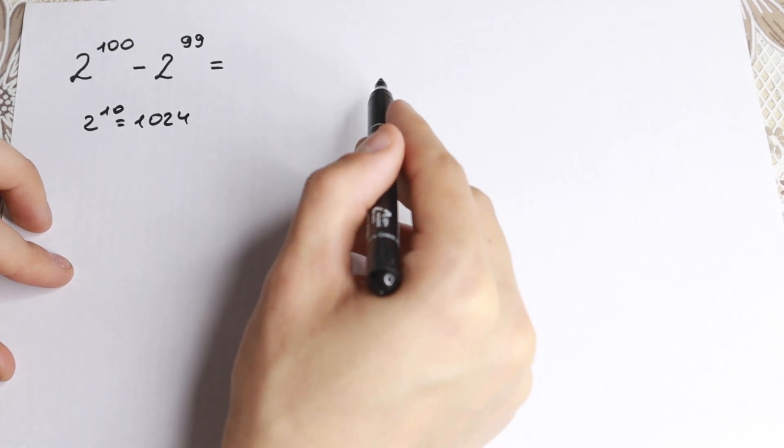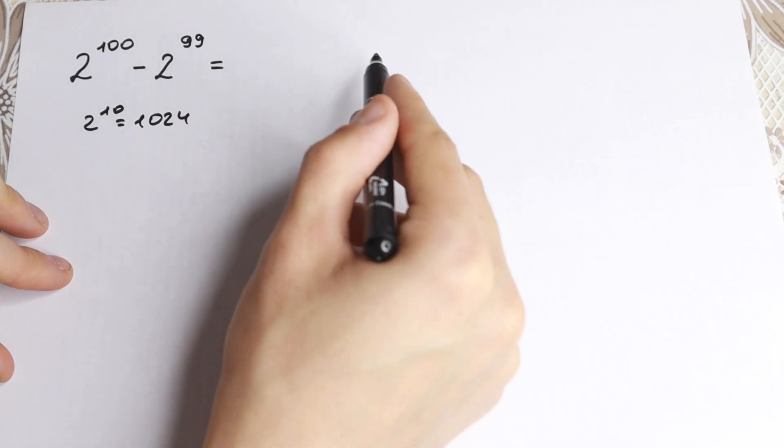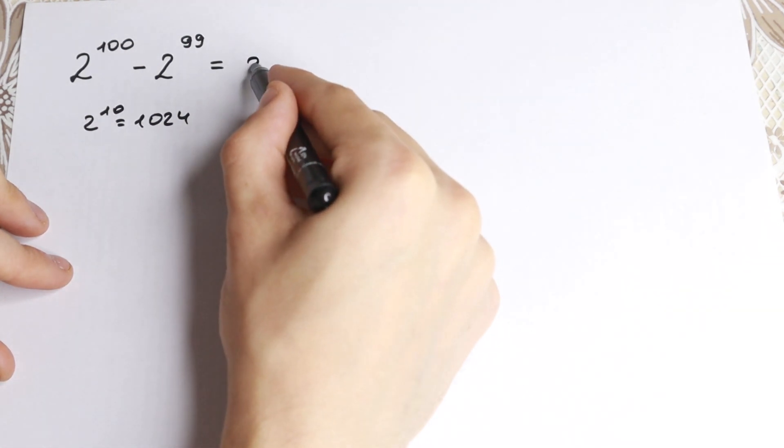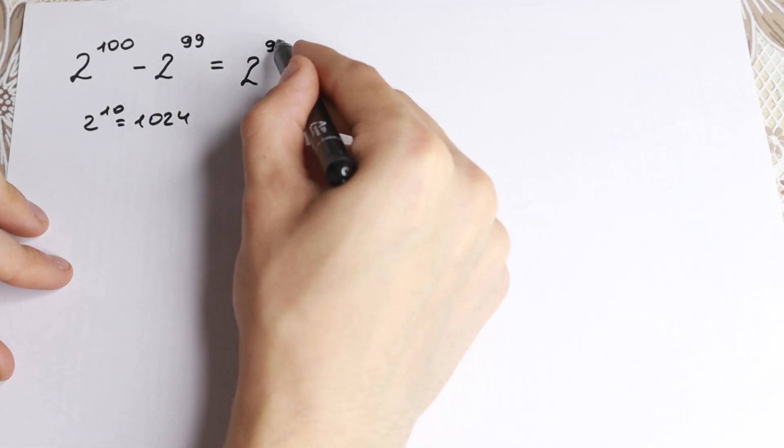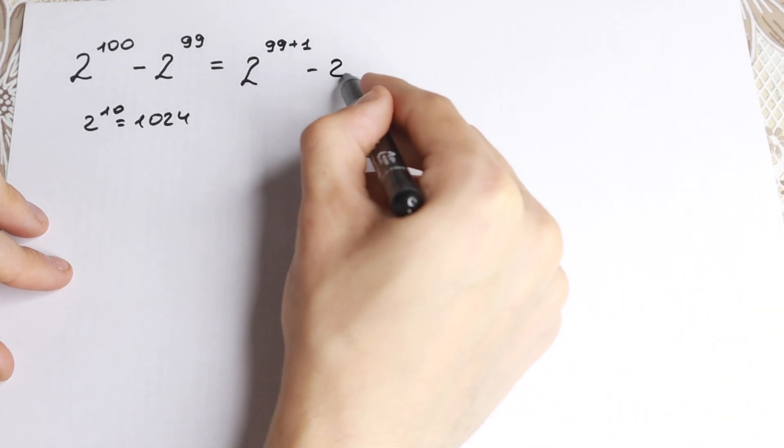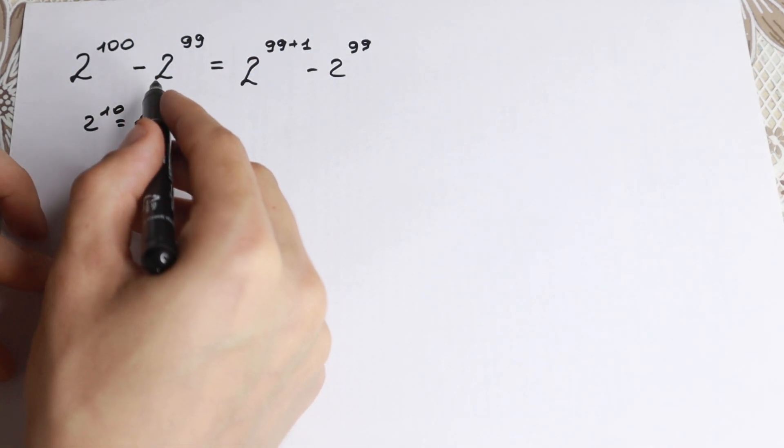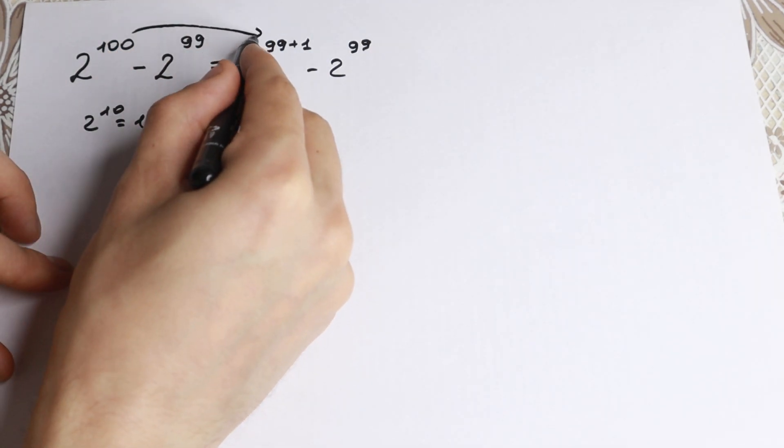But if you know a really good trick right here, if you look closely to our power 199, this is a close powers and moreover if we write this 100 as 99 plus 1 minus 2 to the power 99, we can easily do this. Let's write this power 100 as 99 plus 1.